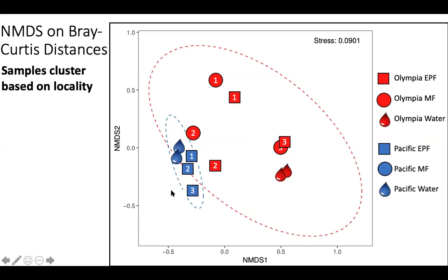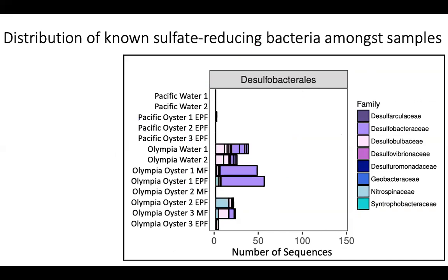The red samples are from the Olympia sampling locality, and the blue samples are from the Pacific oysters. The Olympia oyster samples are statistically different from the Pacific oyster samples — those two groups do exist and are statistically supported. Towards my main question, I wanted to figure out if there was a greater proportion of sulfate-reducing bacteria in the Pacific chalky oysters as opposed to the non-chalky Olympia oysters.